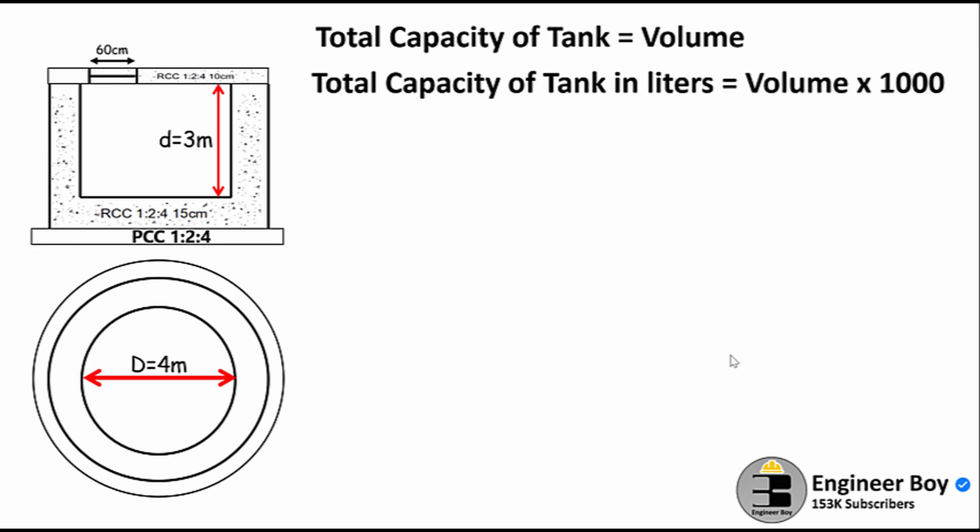Now let's go ahead. The total capacity of the tank, or the volume of the tank, equals area of the base times the depth of the tank. The area of the base can be taken as that area which is covered by the water mass, and the depth is given in the drawing as 3 meters.